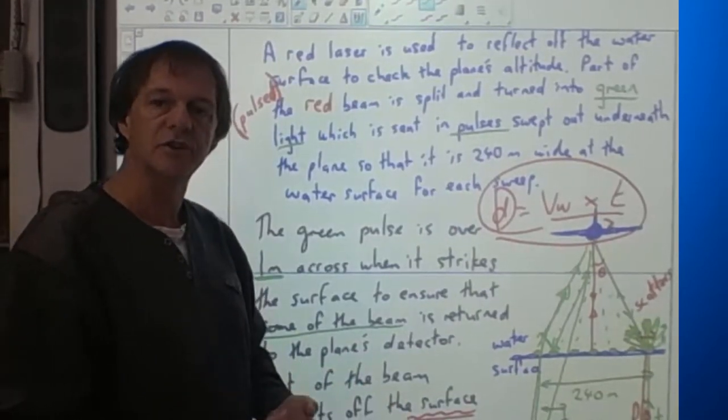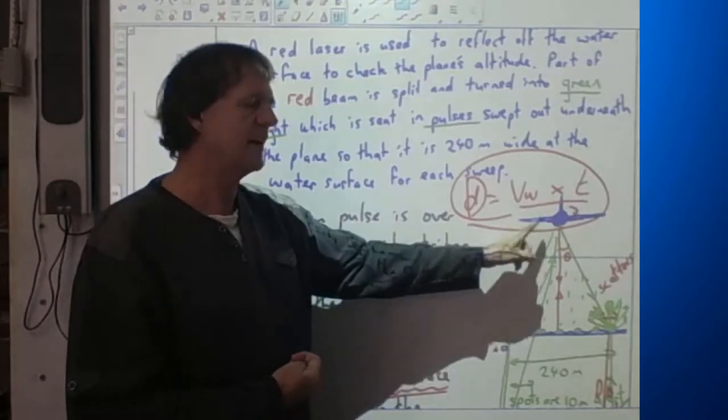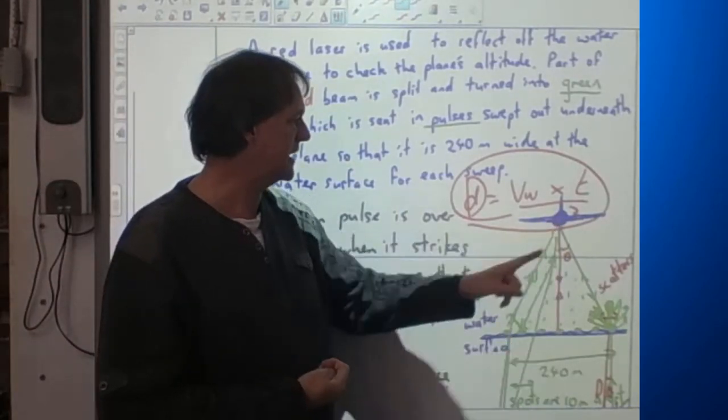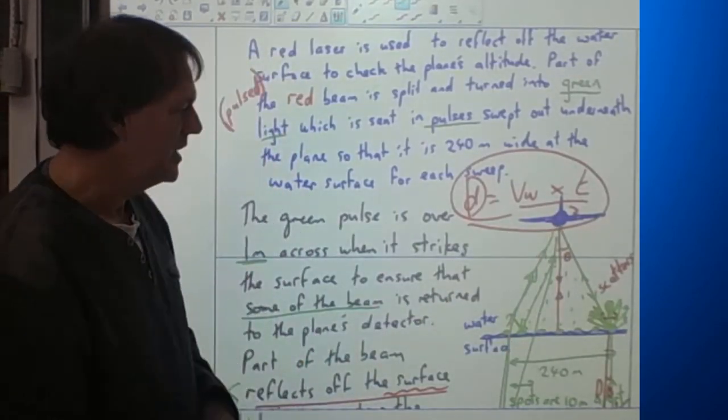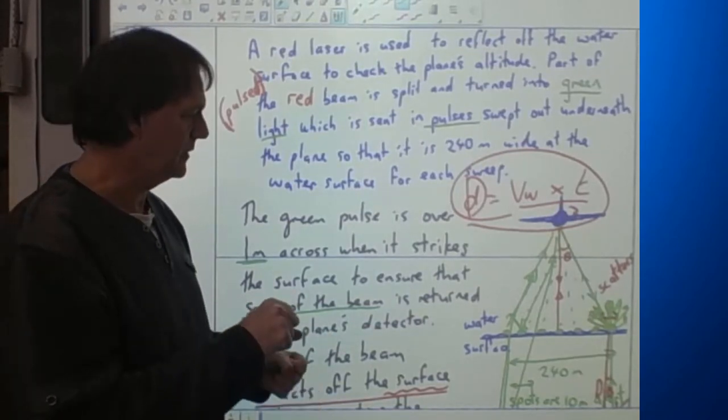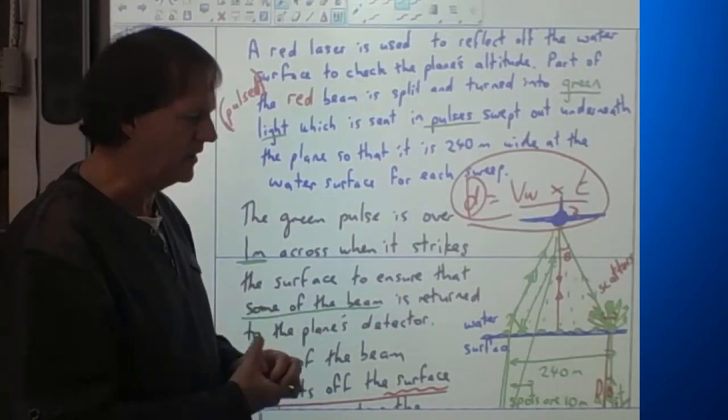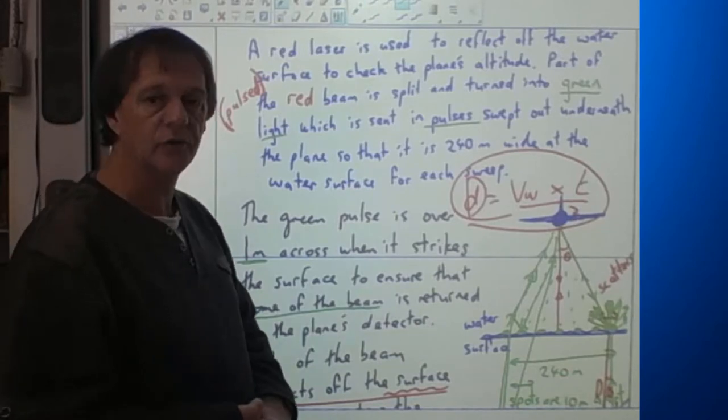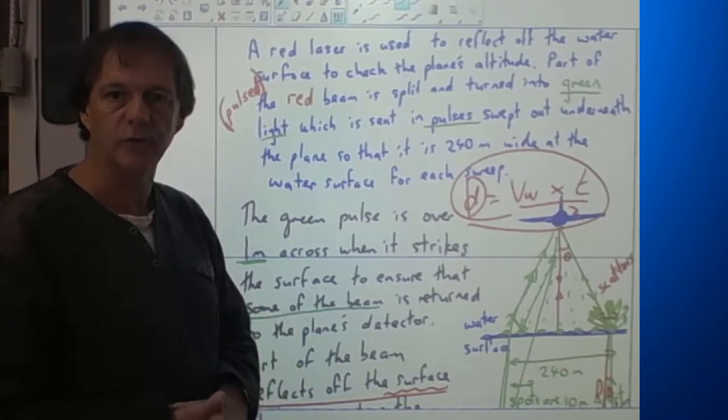You also get some absorption in the water due to suspended silt and it's important to get enough light coming back to the sensor so you actually get a registration. There'll be a limit to how deep this can go because light doesn't penetrate water forever, and they use green because green is a good colour to actually penetrate water and get good depth out of it.